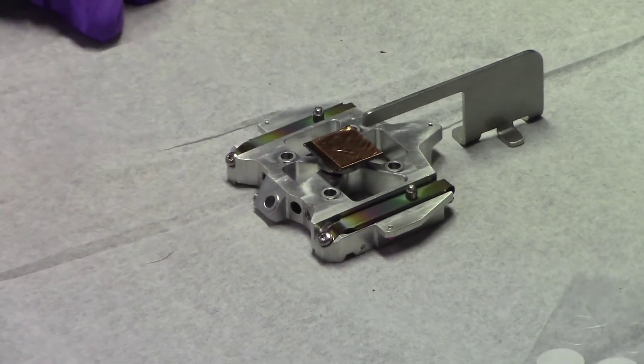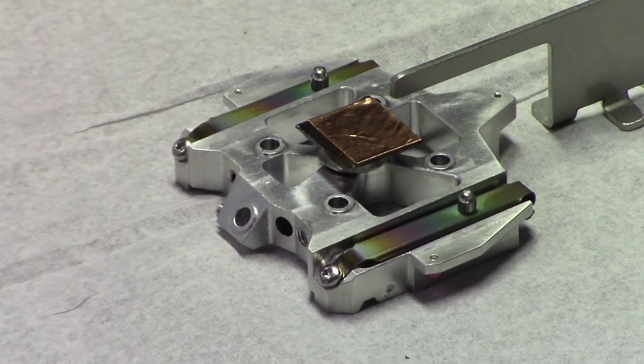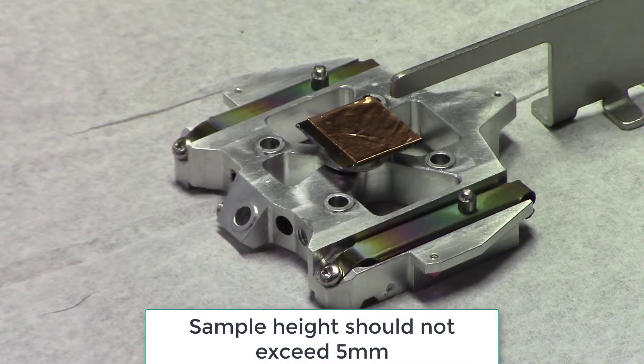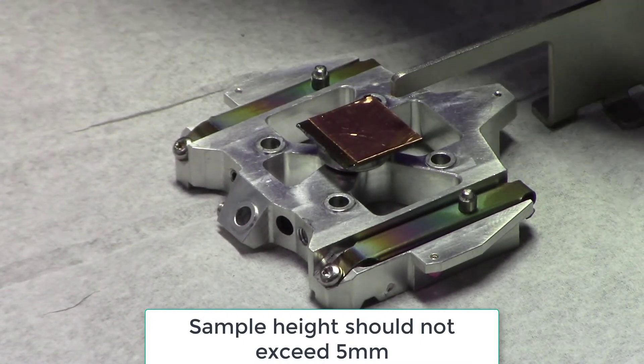Finally, use the height gauge to make sure your sample does not exceed 5 millimeters. Otherwise, it will not fit through the load lock.